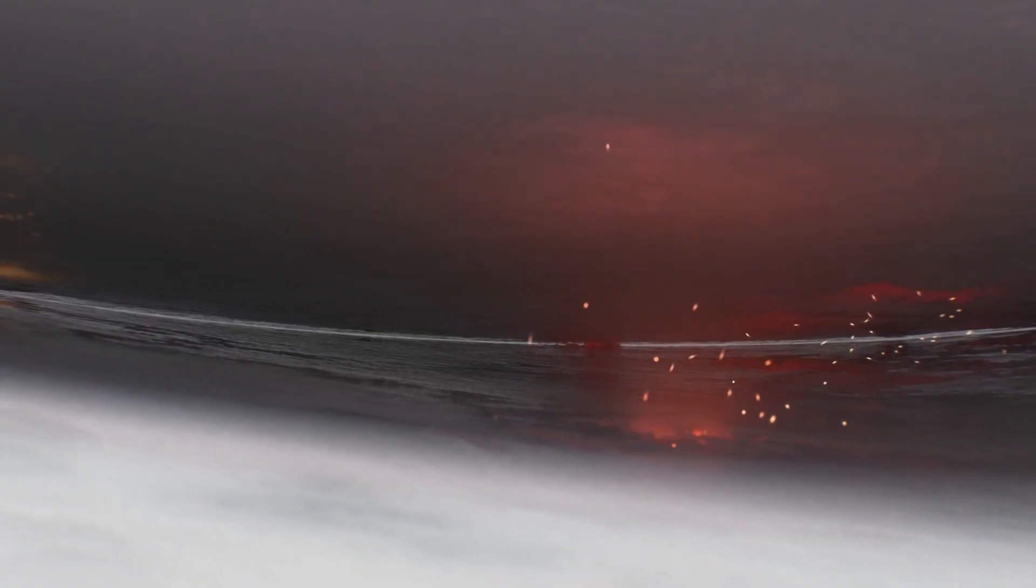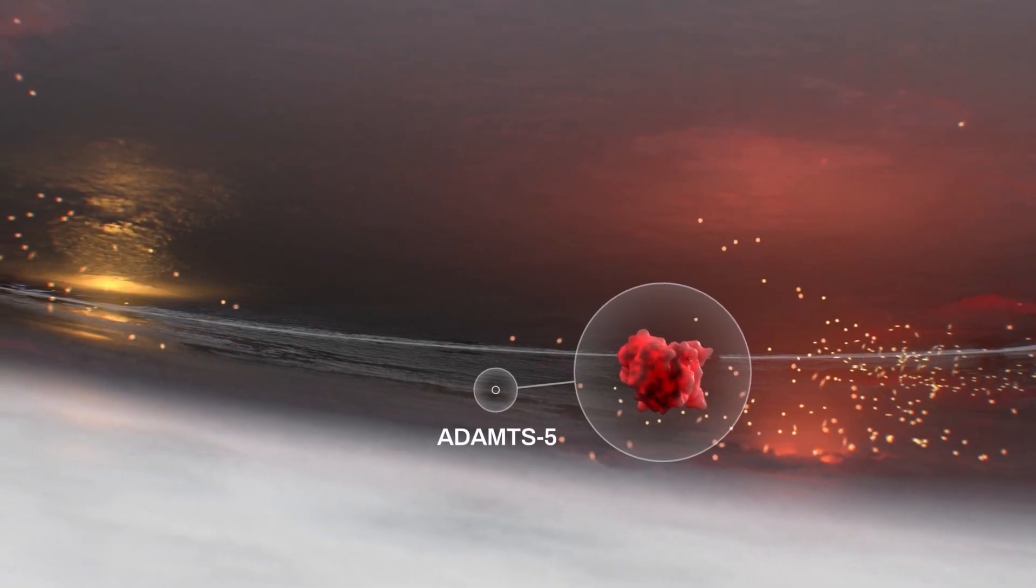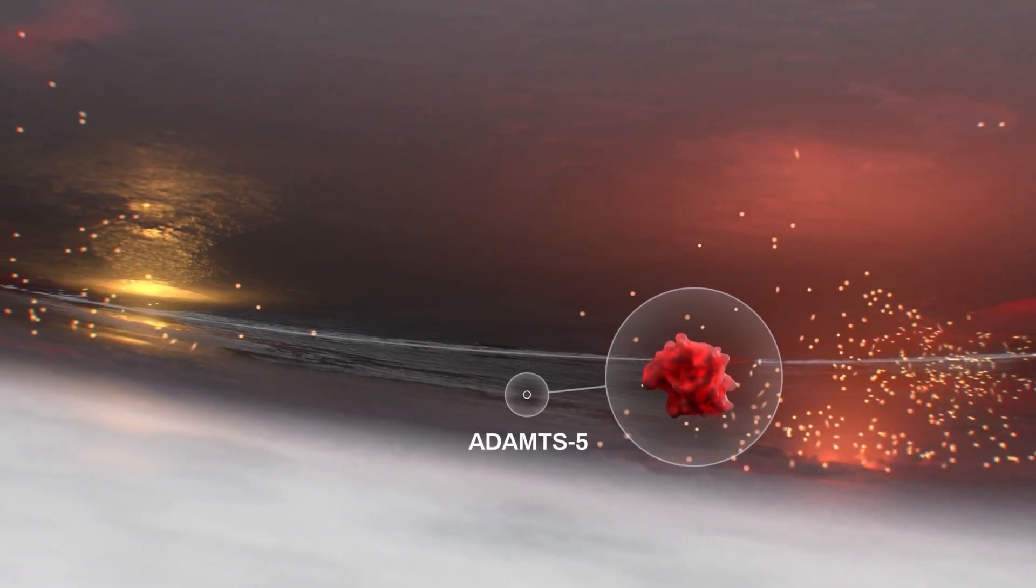NF-kappa-B also increases the production of enzymes that break down the cartilage, such as ADAMTS5, making joints more vulnerable to damage.